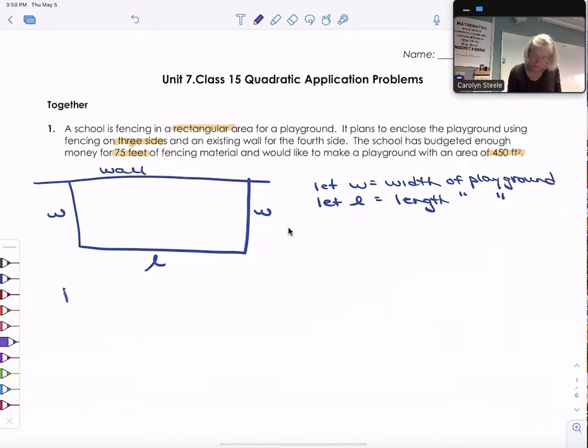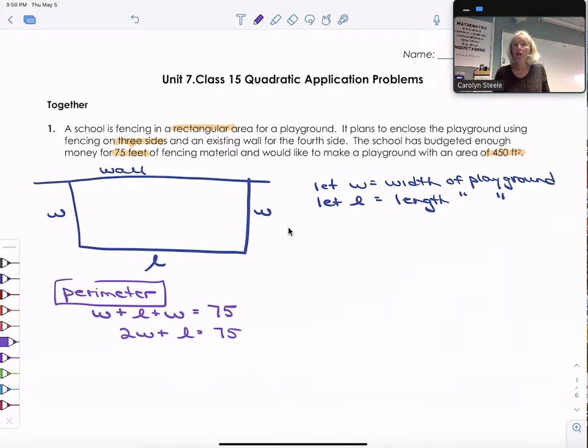I'm going to first think about the perimeter. And for the perimeter we know we're going to go around the fencing so we're going to have a width plus a length plus a width. And all together we have 75 feet of fencing so that perimeter is going to equal 75. I can simplify that to 2W plus L equals 75. And there is an equation that describes what I know about perimeter.